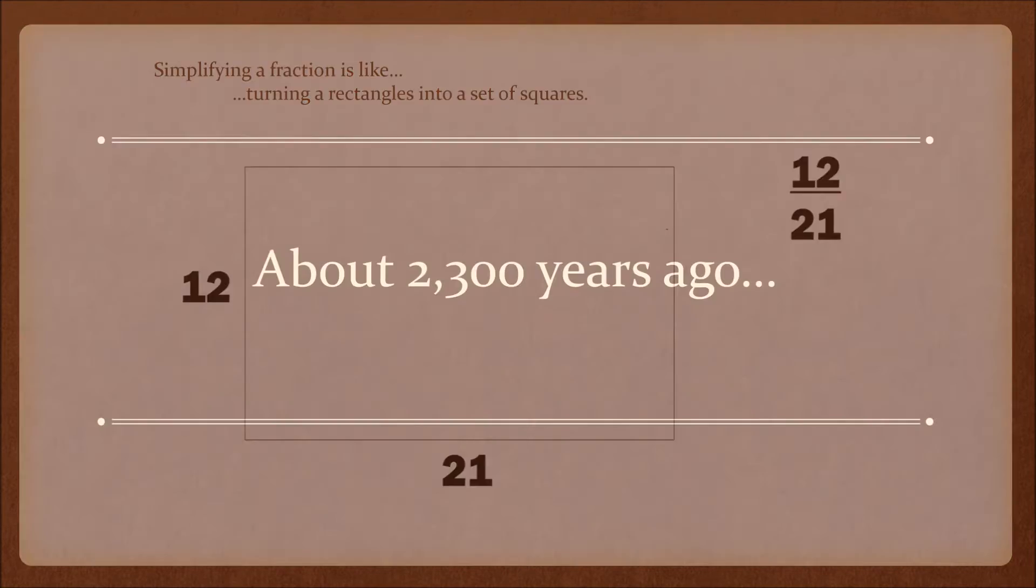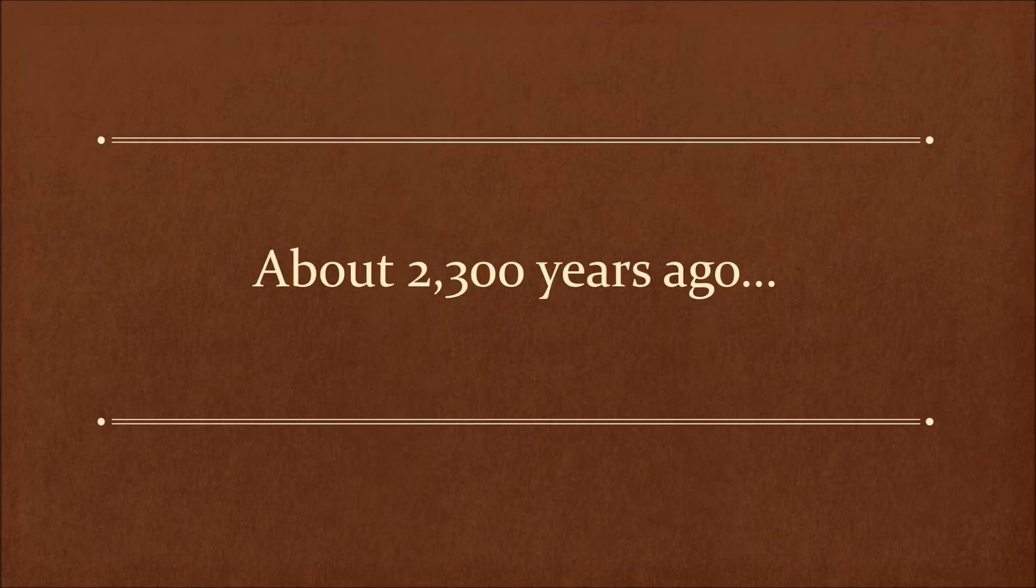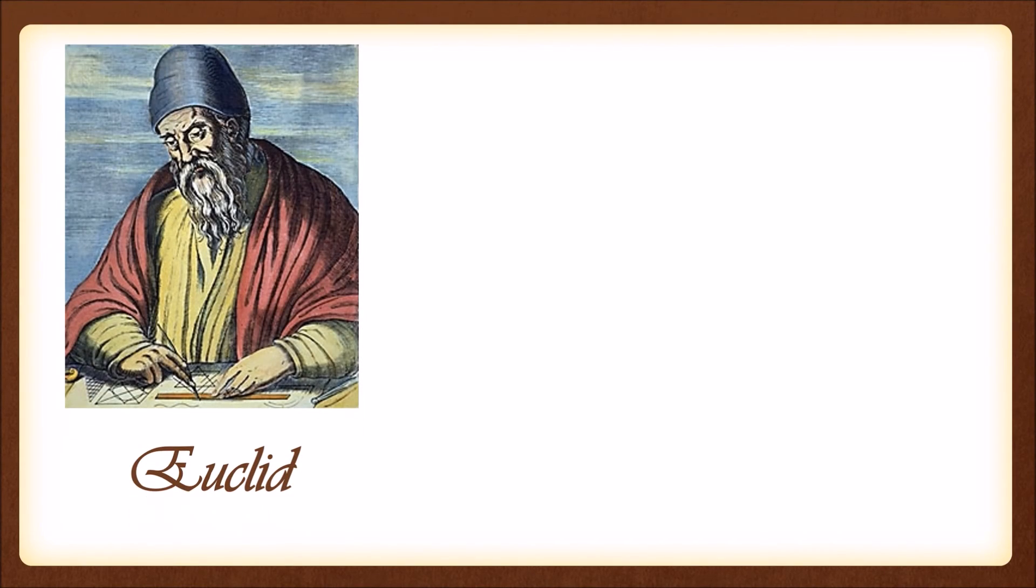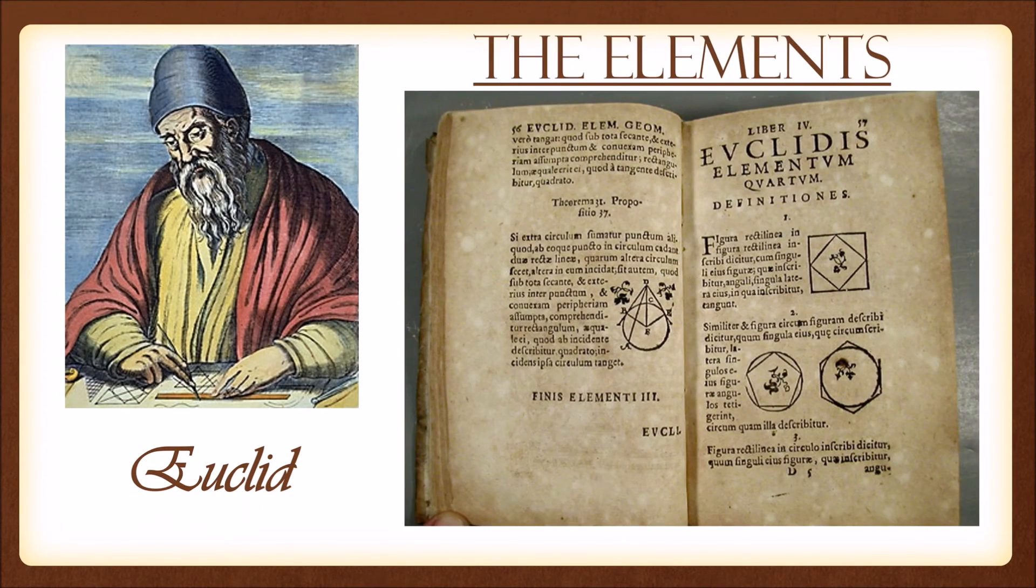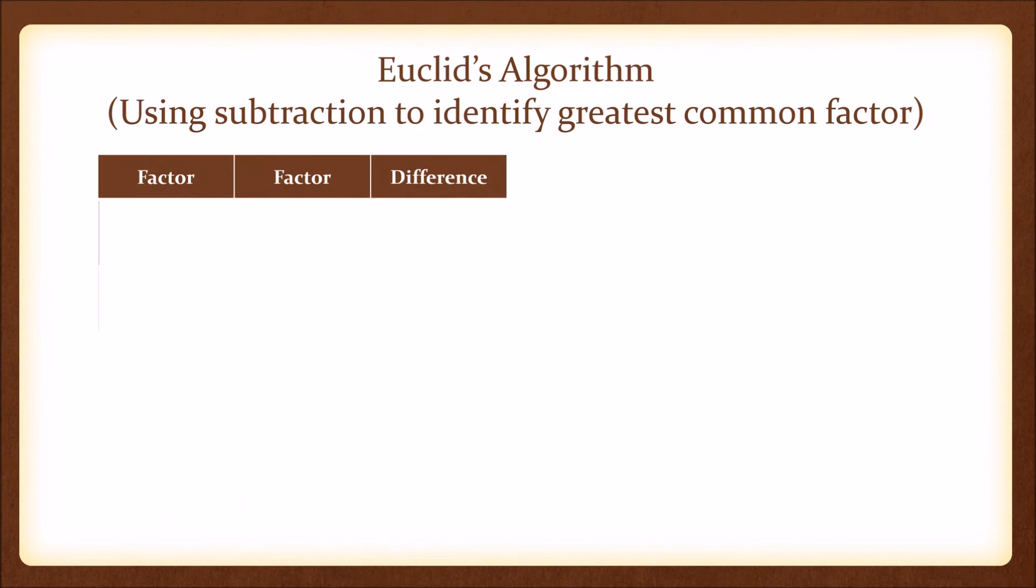So why is this important? About 2300 years ago, the great Greek mathematician Euclid, in his keynote book The Elements in Number Theory, devised Euclid's algorithm. It uses subtraction to identify greatest common factors.